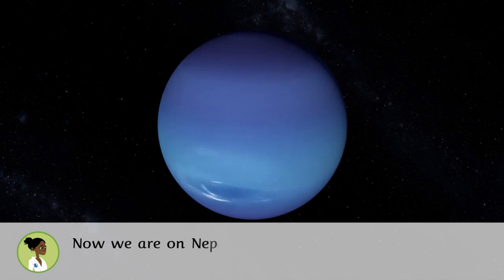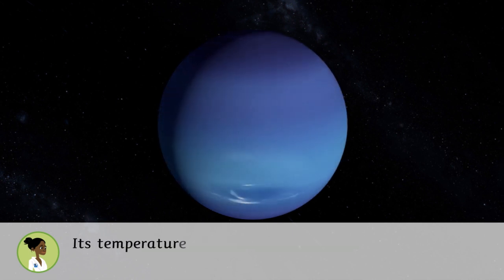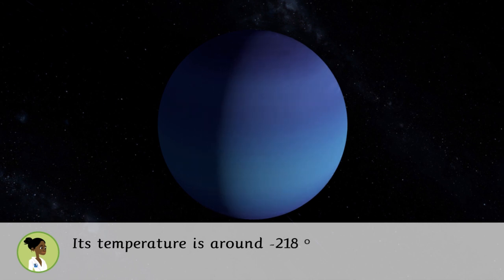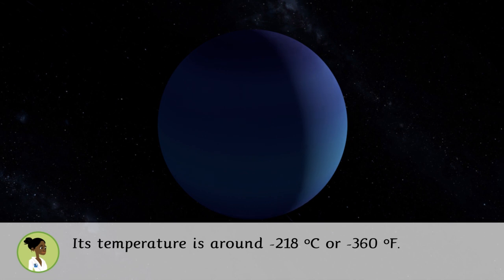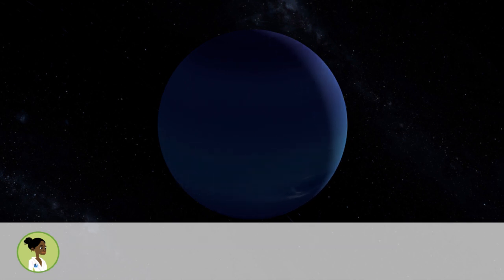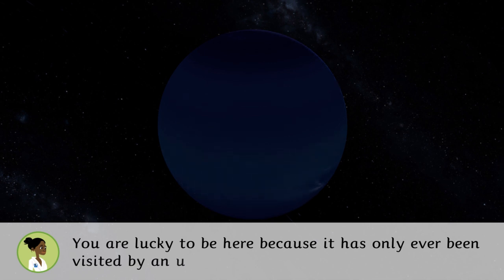Now we are on Neptune, the ice giant. Its temperature is around 218 degrees Celsius below zero or 360 degrees Fahrenheit below zero. You're lucky to be here because it has only been visited by an unmanned spaceship, the Voyager 2.